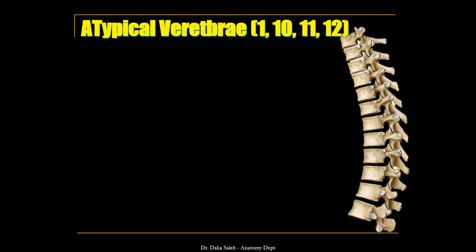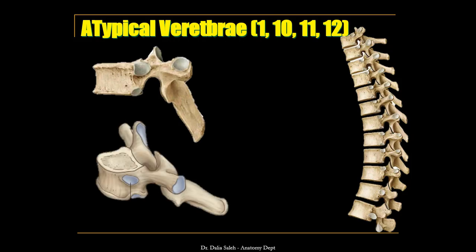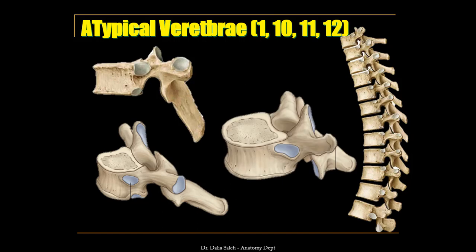The atypical thoracic vertebrae are vertebrae number 1, 10, 11, and 12. The first thoracic vertebra differs mainly in two ways: the side of its body contains an upper complete facet for articulation with the first rib and a lower demifacet for articulation with the second rib, and its spinous process is directed more or less horizontally. The twelfth thoracic vertebra has a large body with a complete facet on the side for articulation with the 12th rib, no facets on the transverse process because the last rib has no tubercle, and its spine is also directed horizontally.